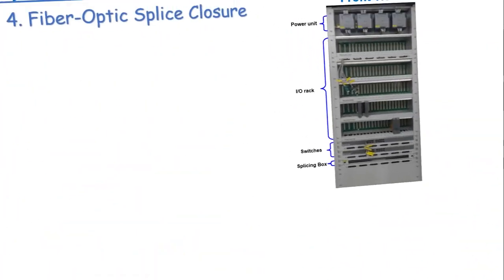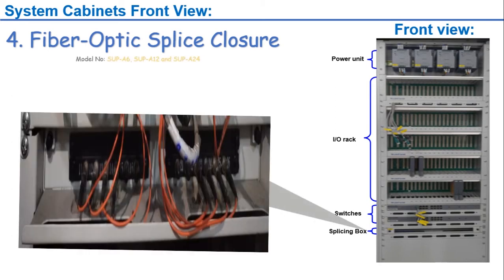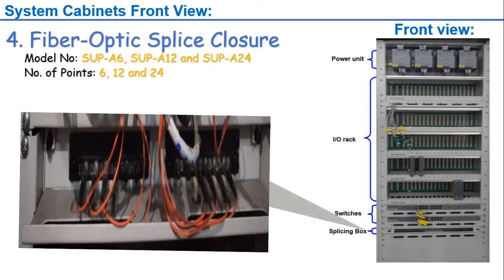The fourth and last section in the front view of the system cabinet is the fiber optic coupler. It has three model types: SUP-A6, SUP-A12, and SUP-A24. The model number depends on the number of fiber optic ports — 6, 12, and 24 respectively. In this picture, the fiber optic coupler has 12 ports.